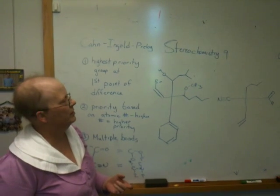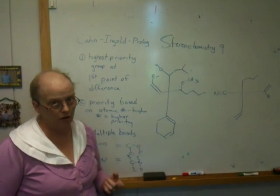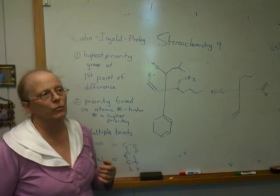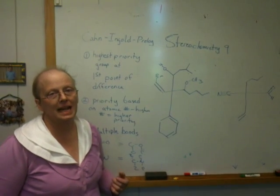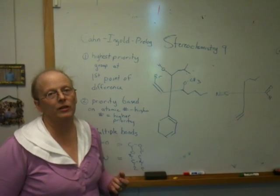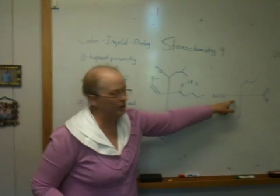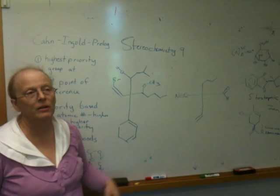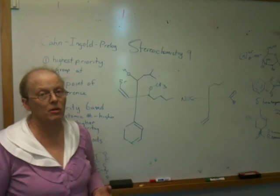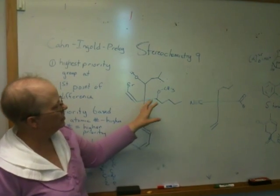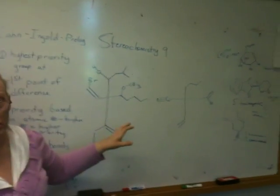What I'm going to do in stereochemistry 9 is do a couple of harder problems involving the assignment of absolute configuration to asymmetric carbons. And I have two hard molecules up on the board. Now, there are simpler examples in the book, but these are going to illustrate how you deal with harder situations.